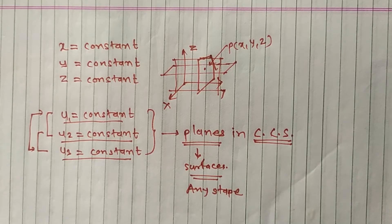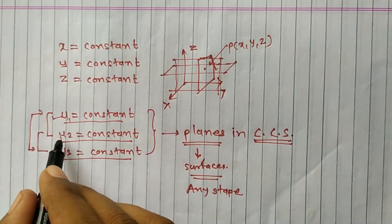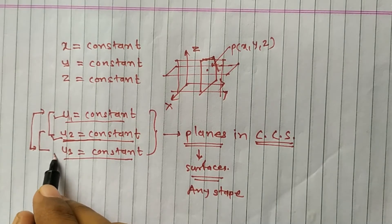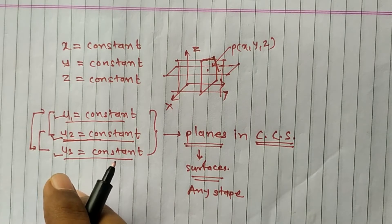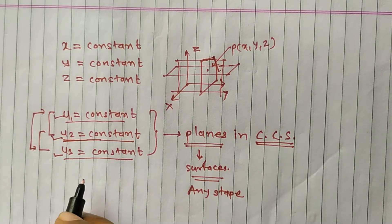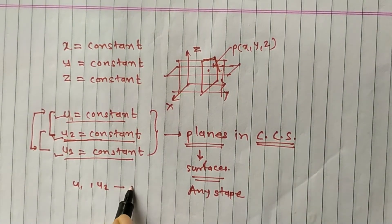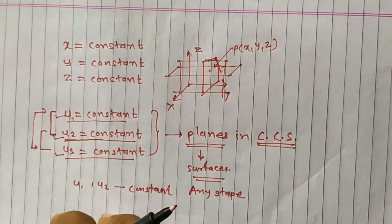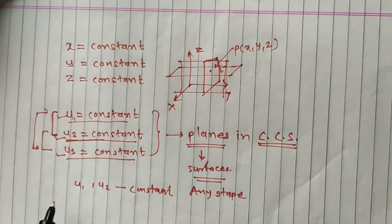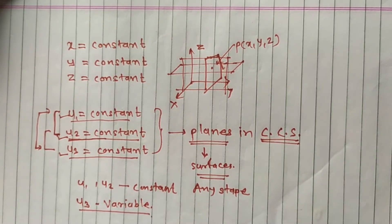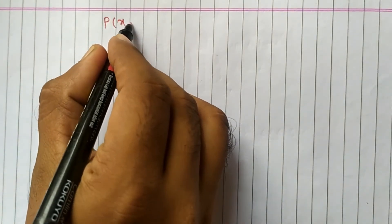The surface on which u1 is constant is called the u1 surface. The surface on which u2 is constant is called the u2 surface, and the surface on which u3 is constant is called the u3 surface. When surfaces intersect each other, there will be coordinate lines where one coordinate is variable and the other two are constant. For example, if u1 and u2 surfaces intersect, then u1 and u2 are constant and u3 is variable.